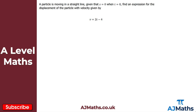Starting off with this question then: we've been given a particle that's moving in a straight line. We're given that s is equal to zero when t is equal to zero, and what we want to do is find an expression for the displacement of the particle with this given velocity. So let's note s, v, and a.